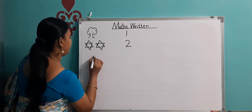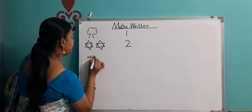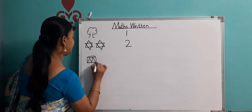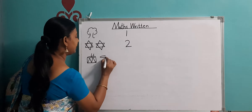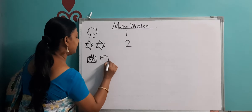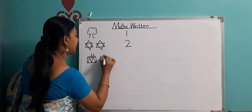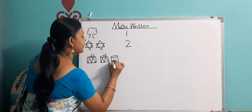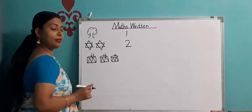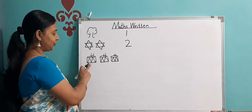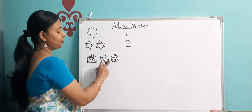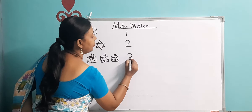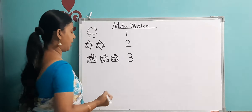And now, tell me what is this? These are drums. So these are drums. How many drums are here? Let us count. We count one, two, and three. How many drums are here? One, two, and three. So I will write here — three. Here are three drums.